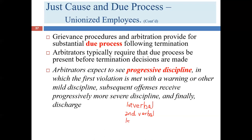The next step might be the first written warning — a document presented that the employee is asked to sign. Signing doesn't mean agreement; it simply confirms the document was reviewed with them. This formal document typically explains what the next steps will be. Perhaps a second written warning follows, then a suspension of a week, and then if there's another occurrence, the employee is dismissed.